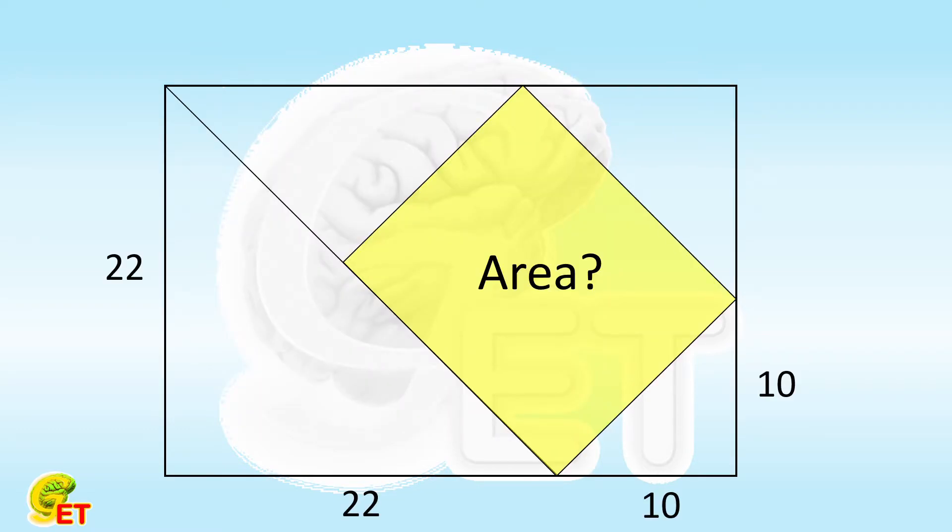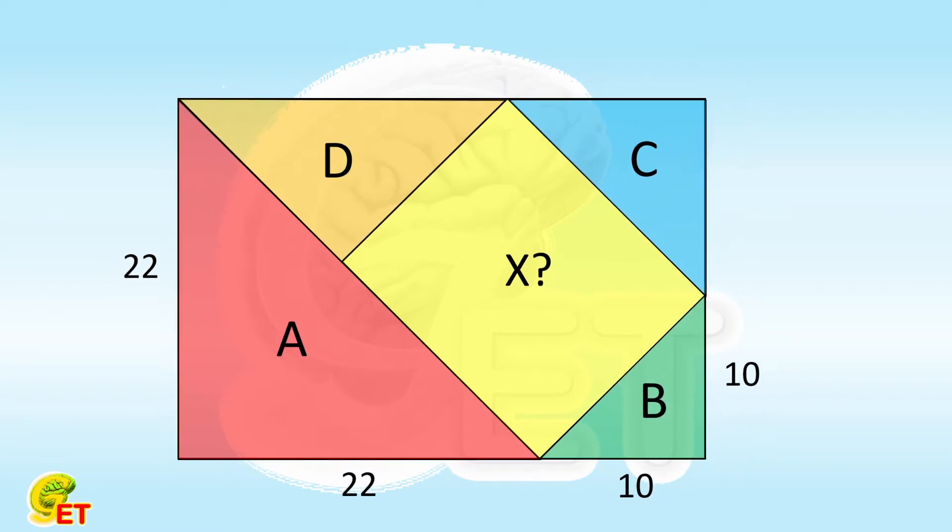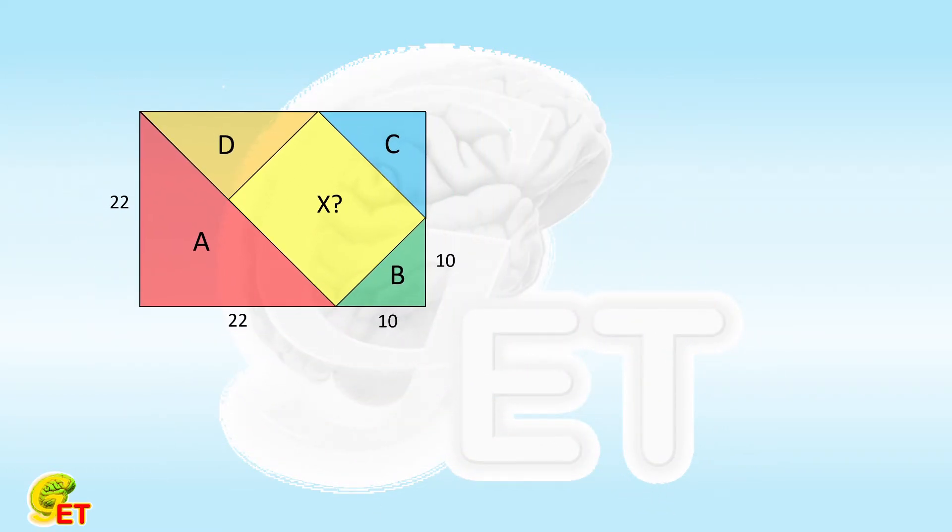Now, let's get back to this figure. We can see that the whole rectangle consists of the target shadow part X, the right triangle A, right triangle B, right triangle C, and the triangle D. So we can calculate the areas of those parts one by one.